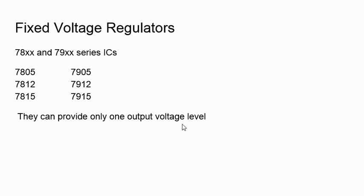You know that fixed voltage regulator ICs, that is the 78xx and 79xx series ICs, are the fixed voltage regulator ICs. That means the output voltage will be fixed - only one voltage it will give.